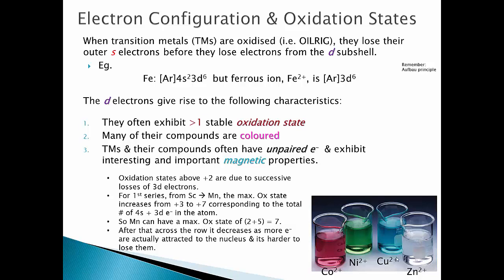Oxidation states of plus 2 are due to successive losses of 4s electrons. Once you've lost those, you start losing the 3d electrons. Looking at the first series, oxidation state increases from plus 3 to plus 7, which is the total number of D electrons. Manganese has the highest oxidation state of plus 7 with 5 D plus 2 S electrons. After that, it decreases as more electrons are attracted to the nucleus, making them harder to remove.